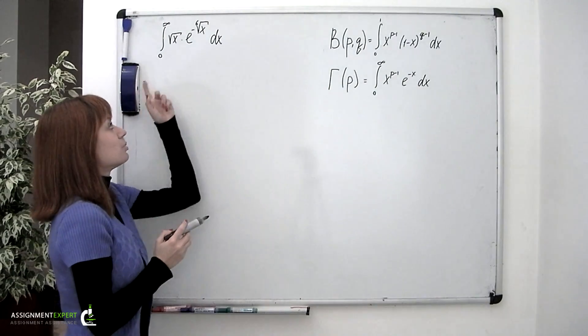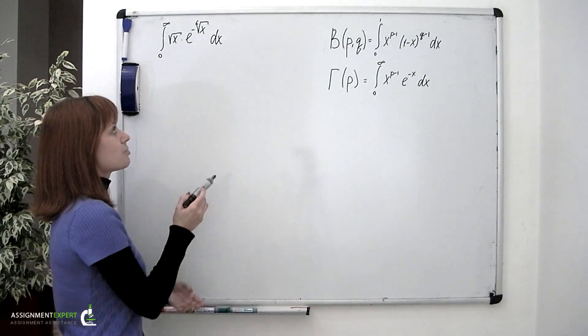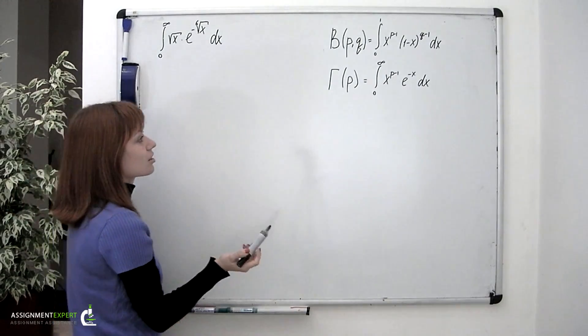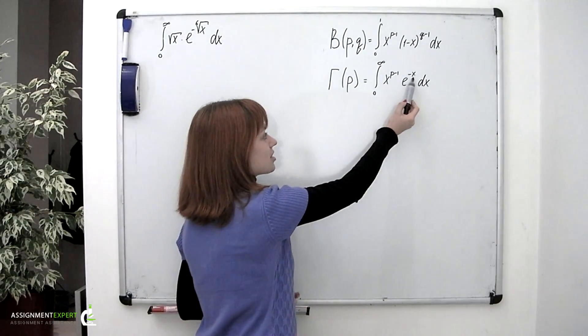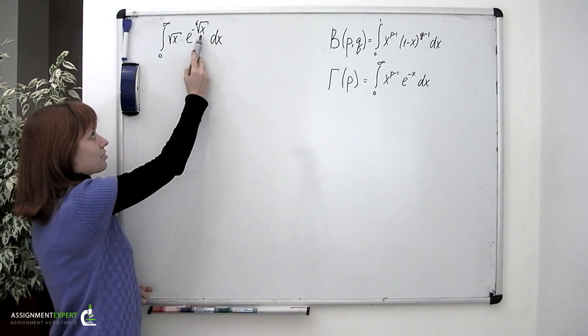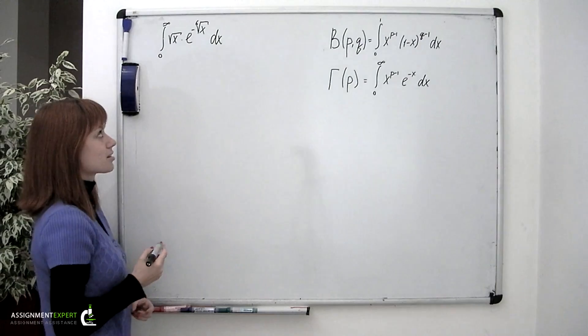Basically, the only thing that's different between these two integrals is the power standing next to the exponent. Here in gamma function we have simply negative x and the given integral has negative 6 root of x. So we should do something about that.